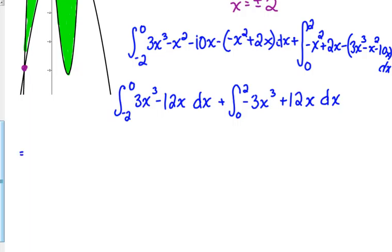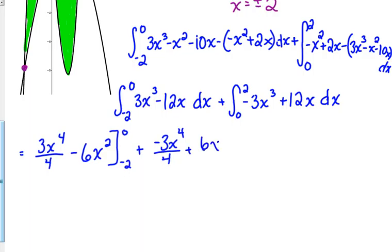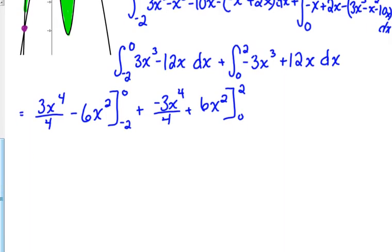So, let's integrate. 3x cubed integrated is 3x to the fourth over 4 minus 6x squared. We're evaluating that from negative 2 to 0. We're going to have the exact same thing. It just has opposite signs. And that's evaluated from 0 to 2. So, when we plug in 0, we're going to get 0.